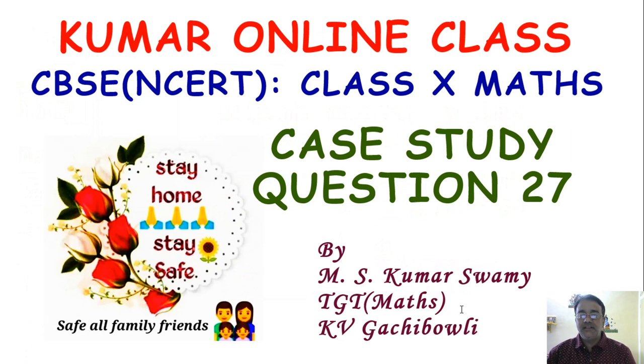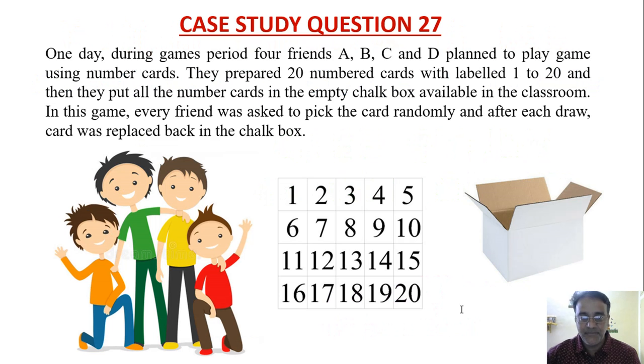Now we are going to start case study question number 27, and this question is based on probability. This is a very good question. One day during games period, four friends A, B, C, and D planned to play a game using number cards. They prepared 20 numbered cards labeled 1 to 20.